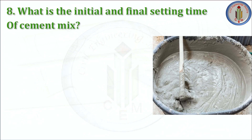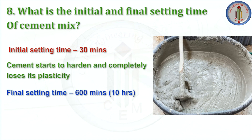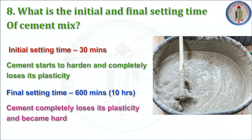What is the initial and final setting time of cement? The time at which the cement starts to harden and completely loses its plasticity is called the initial setting time — that is 30 minutes. The time at which the cement completely loses its plasticity and becomes hard is the final setting time — that is 600 minutes, or 10 hours.